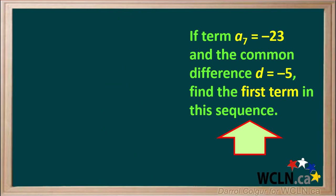Here's a question for you to try. Term a7 is equal to negative 23 and the common difference d is equal to negative 5. Find the first term in this sequence. Pause the video, come up with the answer for yourself, then resume the video and check your answer.